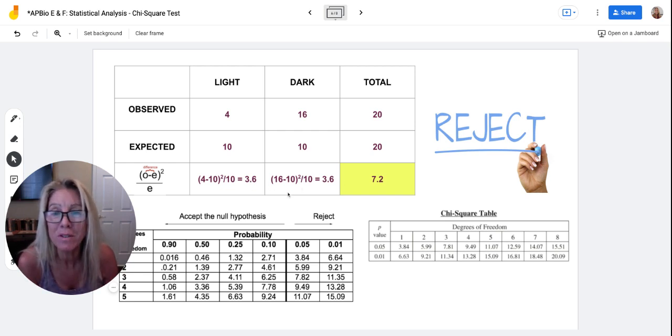So you're going to add those two values up, 3.6 and 3.6, and you get 7.2. That is your chi-squared value. Is that chi-squared value significant?